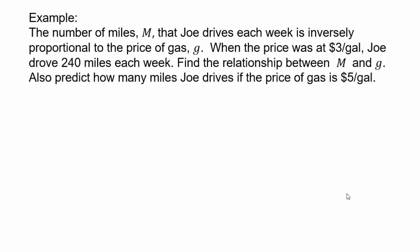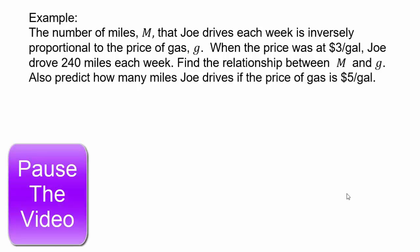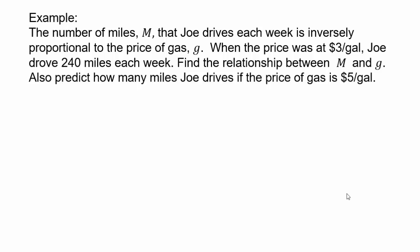Let's take an example to demonstrate that. Suppose you have that m is the number of miles Joe drives each week and is inversely proportional to the price of gas. So when the price is $3 a gallon, Joe drives 240 miles each week. Determine the relationship between m and g and also predict how many miles Joe will drive if the price of gas is $5 a gallon. So I would highly recommend pausing the video here, making the chart, getting the variables, and setting up the equations. See what you can do. Go ahead, try it on your own, just like we did with the direct variation.